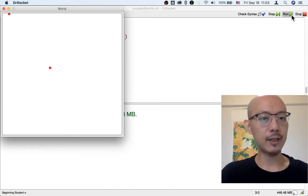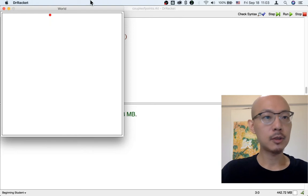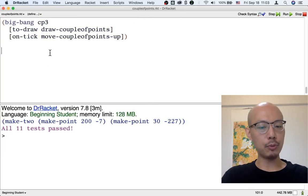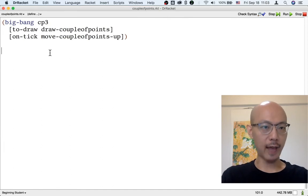Now, even though it's kind of fun to watch points move up, we also want to make new points and put them into the world using the mouse. So how are we going to add new points? Let's design a function to do that.